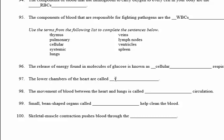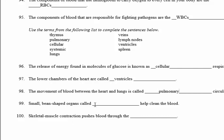Number 97: the lower chambers of the heart are called ventricles. Number 98: the movement of blood between the heart and the lungs is called pulmonary circulation. Number 99: small bean-shaped organs called lymph nodes help clean the blood.